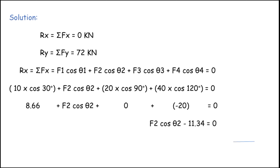Transferring −11.34 to the right side gives F2·cos θ2 = 11.34. This is Equation 1.